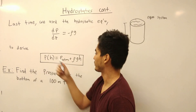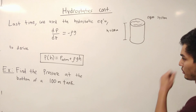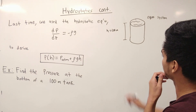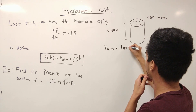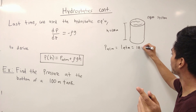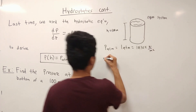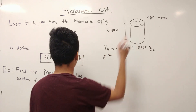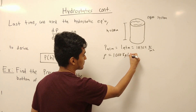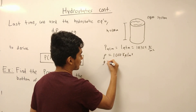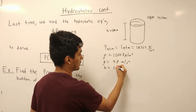Notice how, since pressure is a function of height, we can do this for any height, but as an example we can put this to concrete use. Since it's an open system, we know that P_ATM is going to be one atmosphere, which is 101,325 Pa in SI units. Density of water — we're going to say it's a water tank full of water — is going to be 1,000 kilograms per meter cubed. Gravitational constant is 9.8 meters per second squared, and the height is going to be 100 meters.